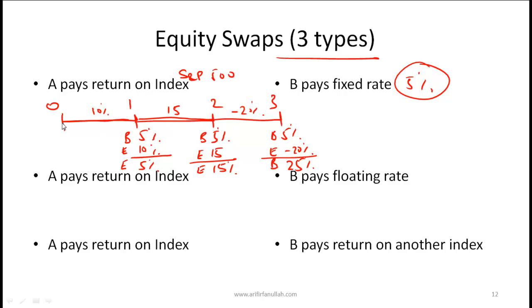Notice two important things: first, we determine who pays whom and how much at the end of every period, unlike plain interest rate swaps where the payment is known at the start of the period. Here the payment can only be calculated at the end of period 1. Second, even the fixed rate payer's payment can be variable — when the index went down, party B's payment was actually 25%, so the fixed rate payer may also make a variable payment in an equity swap.